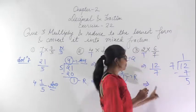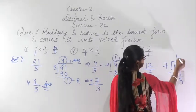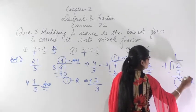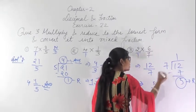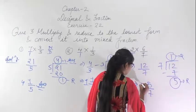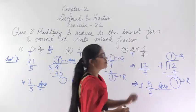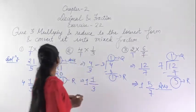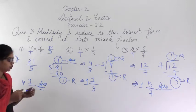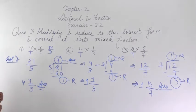How do you write this in the mixed fraction? The term in the denominator stays in the denominator. The remainder comes in the upper portion and the quotient comes on the side. You can see 7 plus 5 is 12. That was question number 3: multiply first, reduce to the lowest form, then convert into the mixed fraction.